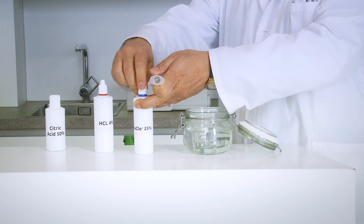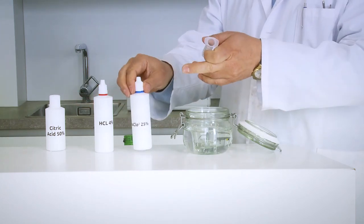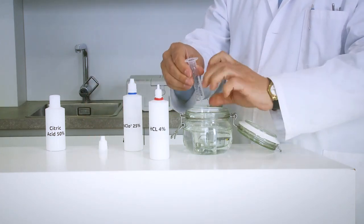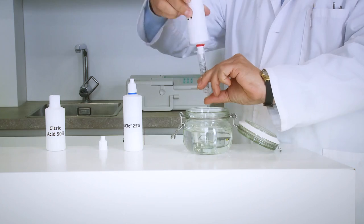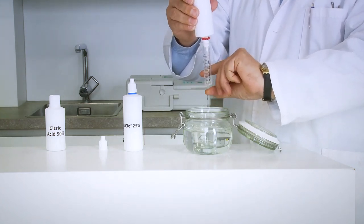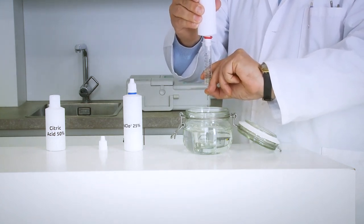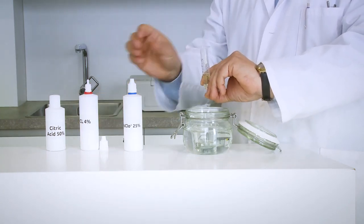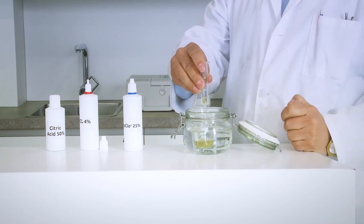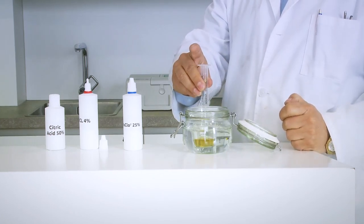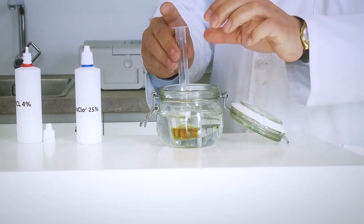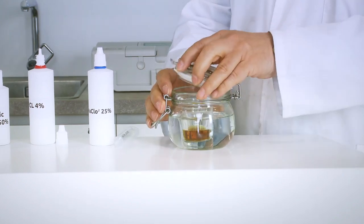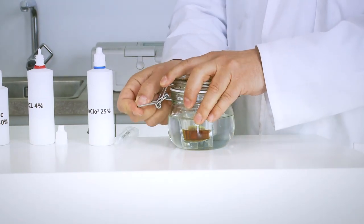We close the cap. And now the activator, that's hydrochloric acid at 4%. We close it as well. Another 5. And we put it inside. Don't worry about the drops on your finger. We can wash it later. It is actually not as aggressive as some people might think.